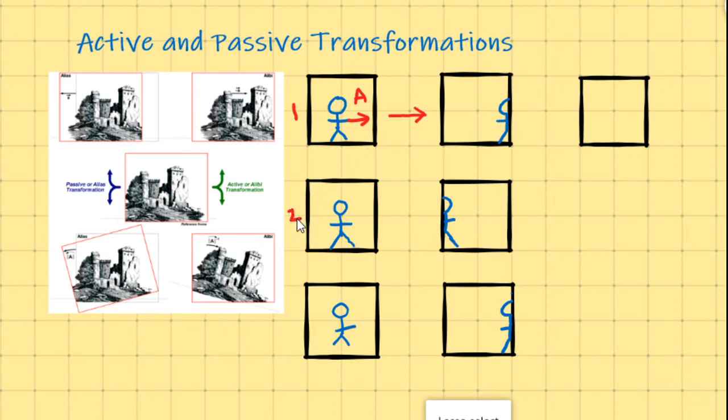In the second instance, we're going to perform a passive transformation. A passive transformation is where we move the frame, leaving the object untouched. So if you imagine dragging the frame to the right, positive x direction, you would leave the little man behind, and you would end up over to the left-hand side of the frame. That's a passive transformation.